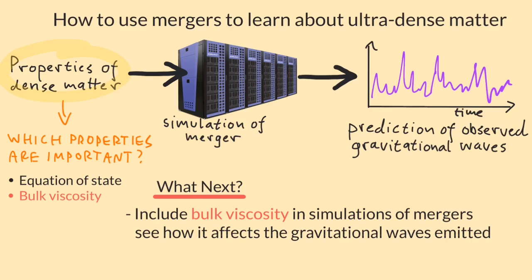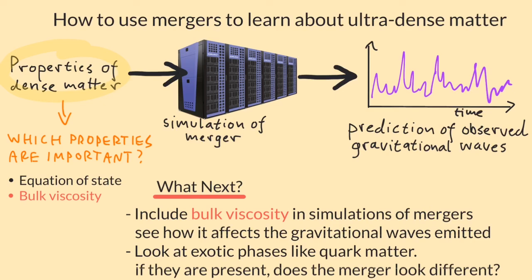Secondly, we only looked at the bulk viscosity of ordinary nucleonic matter, neutrons and protons. We need to calculate the bulk viscosity of other, more exotic forms of matter, like hyperonic or quark matter, and feed those into simulations and see if they give a different prediction for how the merger should look to astronomers.